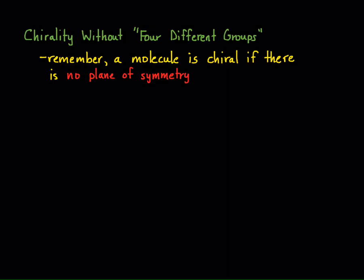If there's a plane of symmetry, then the molecule's achiral, and we call that a meso compound. But are there conditions in which a molecule doesn't even have a stereogenic carbon, and yet it is chiral? And the simple answer to that is, yes, there are examples. Are there a lot of them? Not necessarily. It certainly has to do with the shape of the molecule.